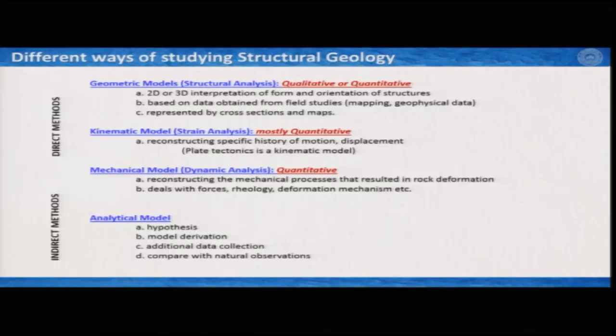The kinematic model is the next stage of the geometric model. After constructing the geometric models, a structural geologist tries to understand what are the different motions at different parts of the structure — which part has moved, which way, relative to the other parts. That helps you understand deformation, displacement, and motion of things. You can imagine that plate tectonics, which deals with the motion of plates, is a kind of kinematic model.